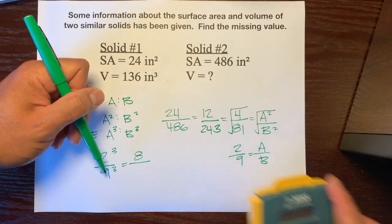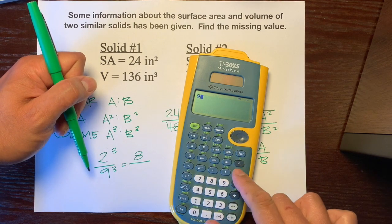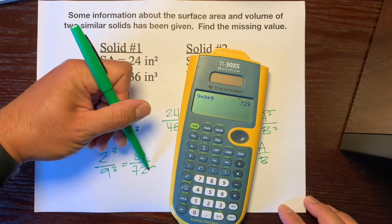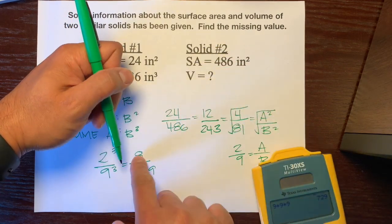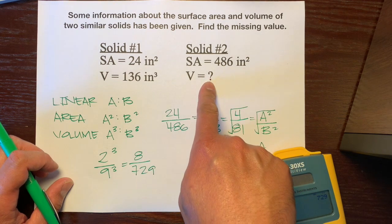And 9 cubed is not 27. I have to use my calculator. So, 9 times 9 times 9 is 729. So, we're going to use this ratio right here to help us find that missing volume.